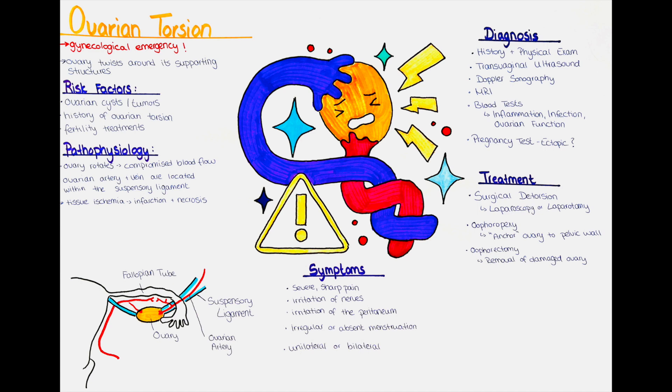In some cases after detorsion, we have to perform an oophoropexy, which involves attaching the ovary to a stable structure, such as the pelvic side wall, to prevent further episodes of torsion.